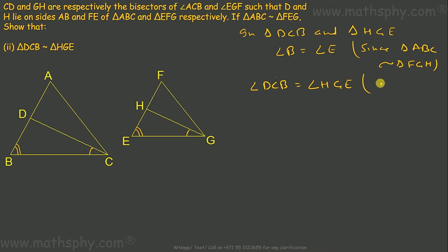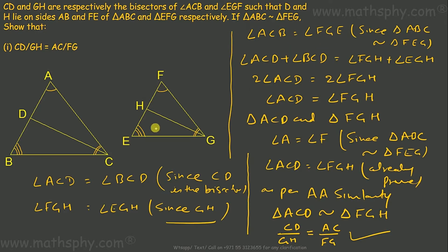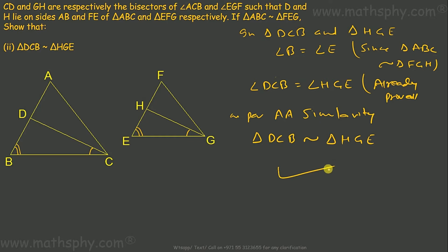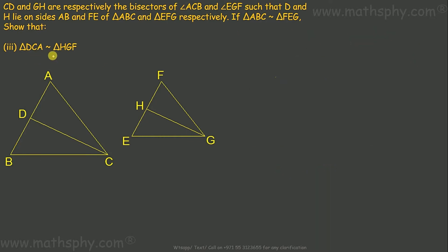We already proved angle ACD equals angle FGH, so angle DCB equals angle HGE as well. By angle-angle similarity, when two angles are equal the third is also equal, so triangle DCB is similar to triangle HGE.